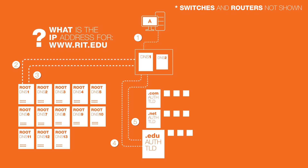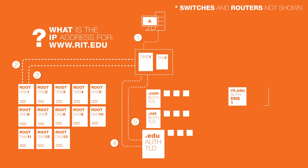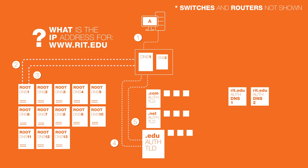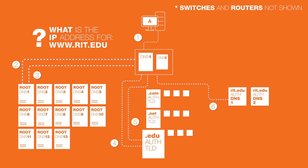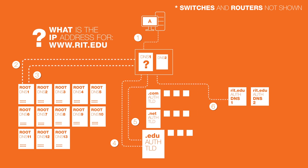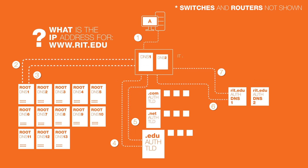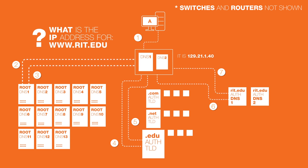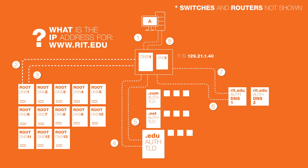Now the client's DNS server finally has the IP addresses of the authoritative DNS servers of the RIT.edu domain and asks one of them the same question: what's the IP address of the machine named www in the RIT subdomain of the .edu top-level domain? One of the RIT authoritative DNS servers gives the answer back to the client's DNS server — it's 129.21.1.40 — and the client's DNS server gives that answer back to the client as if it knew the answer all along.